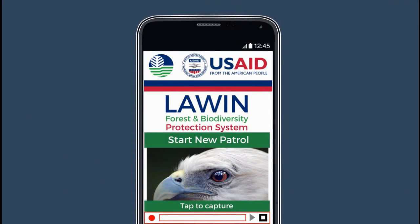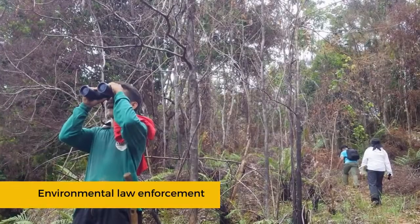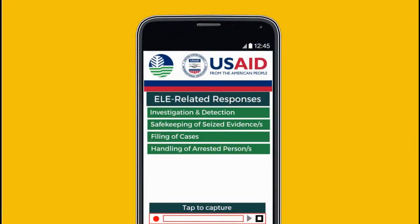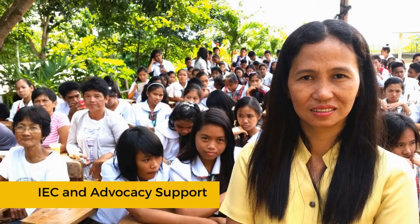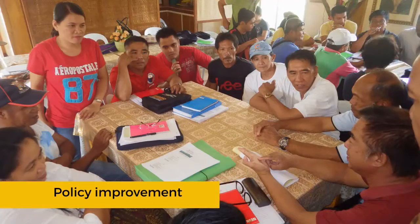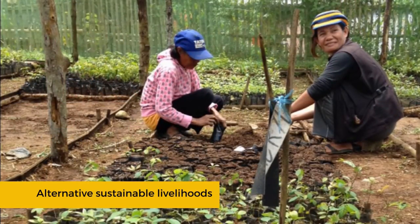The second essential element of the Lawin System is the identification and implementation of management interventions to address the threats that were recorded. These could be environmental law enforcement, information, education, and communication support, policy formulation or improvement, and provision of alternative sustainable livelihoods.